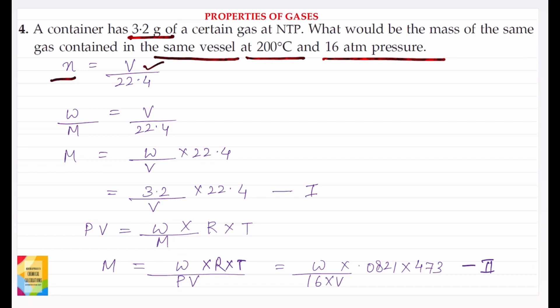Number of moles is volume divided by molar volume. Let the volume of the gas be V or molar volume is 22.4 liters, and number of moles is also equal to weight divided by molecular weight or the molar mass.